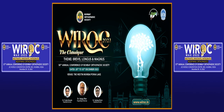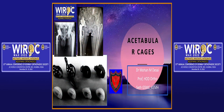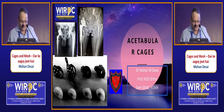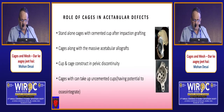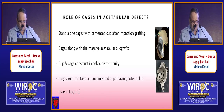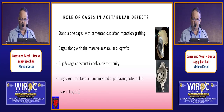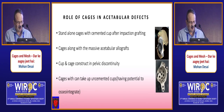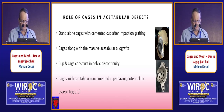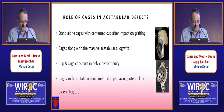Are cages still relevant? The stand-alone cage with cemented cup, impaction grafting, or massive allografts is declining, but the cup-and-cage construct can be used in pelvic discontinuity. There are cages that can accept uncemented cups, and a few have potential to osseointegrate. Conventional cages act as an internal splint or bridge until the biology takes over, protecting the graft from stresses.